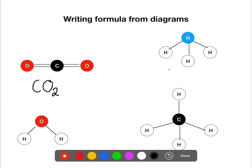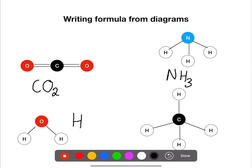For this next example we have one nitrogen and three hydrogens: NH₃. Here we have water — two hydrogens and one oxygen. And then finally methane, where we have one carbon and four hydrogens.